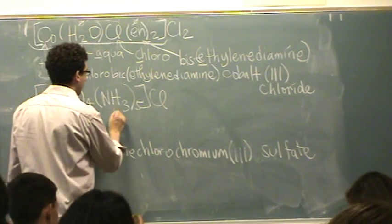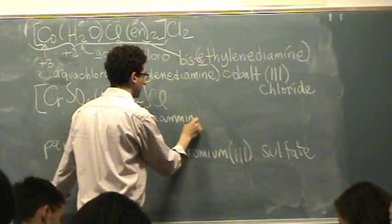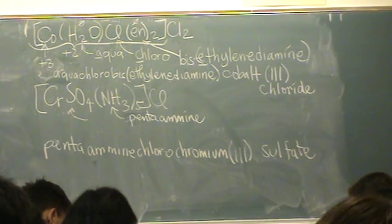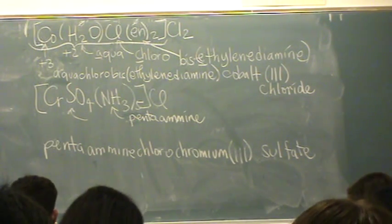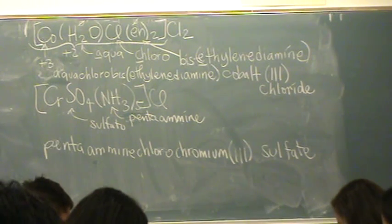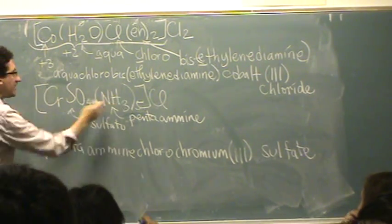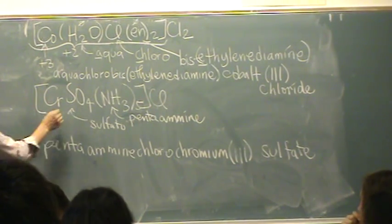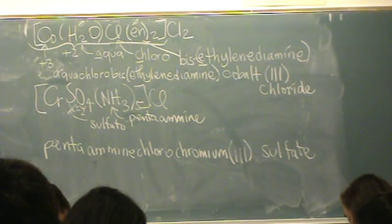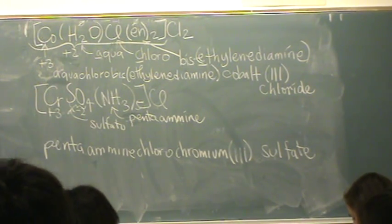Next one. So, amine — there's five of them, so it's a pentaamine, two M's. This is normally sulfate, but what did I say the ending is for ligands? An O, so sulfato. There's only one of them, so no prefix. We've got chromium. What's the charge inside the brackets? Plus one. What's the charge of sulfate? Minus two. Ammonia is zero, so what does chromium have to be? Plus three. Three minus two equals the bracket charge of plus one.